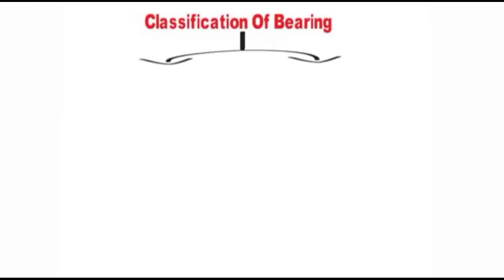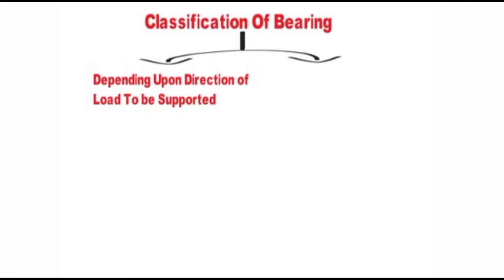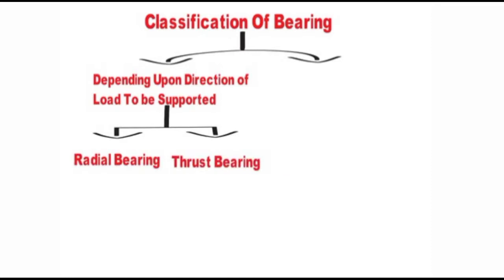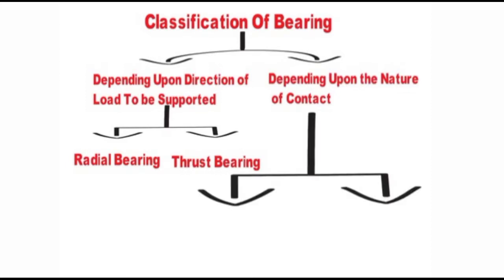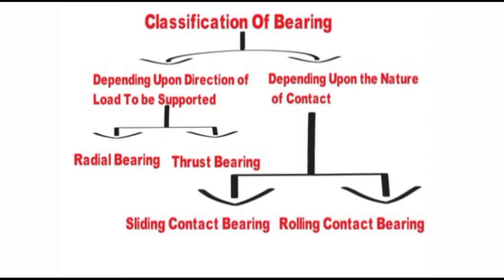Classification of bearing: bearing is classified in two ways. First, depending upon the direction of load to be supported — radial bearing and thrust bearing. Second, depending upon the nature of contact — sliding contact bearing and rolling contact bearing.